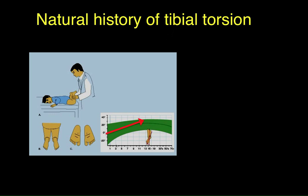If you look at the normal values, the tibia externally rotates — it goes from an internally rotated position to externally rotated — and this happens throughout childhood, up to about age 12 or 15. So the natural history is for external tibial torsion to worsen with time.